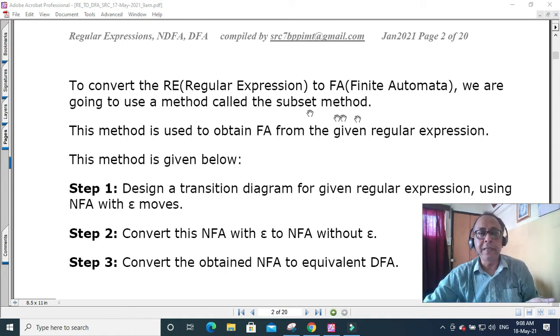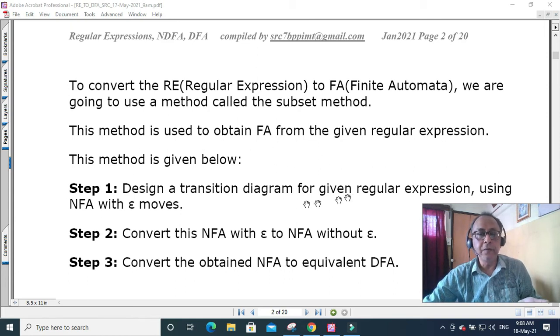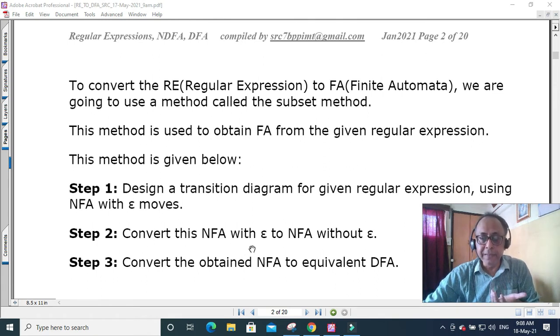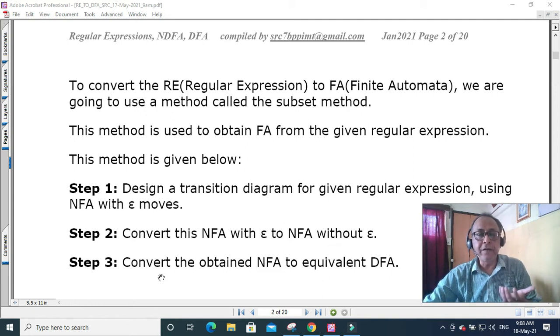So this is called subset method. This method is used to make finite automata from a given regular expression. The method is given below: design a transition diagram for a given regular expression using NFA, first it is easier to do NFA with epsilon moves, then step two convert this NFA with epsilon to NFA without epsilon, and step three convert the NFA to equivalent DFA.